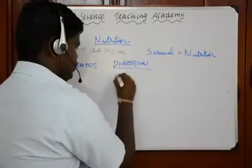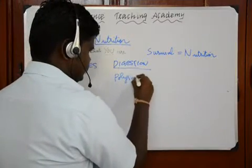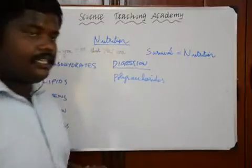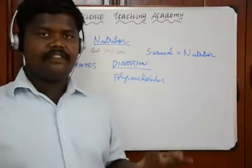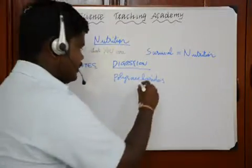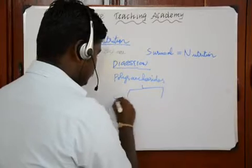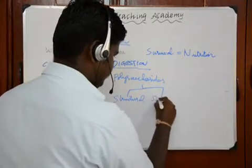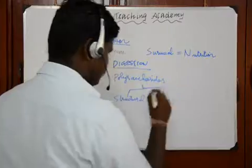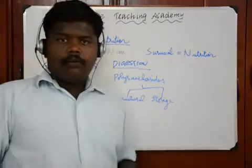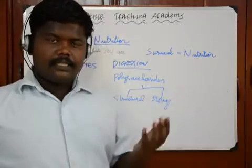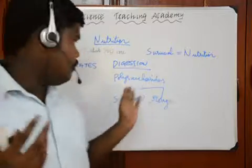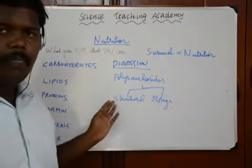Moving on to polysaccharides — polysaccharides are composed of many monosaccharides. They are divided into two classifications: structural and storage polysaccharides.